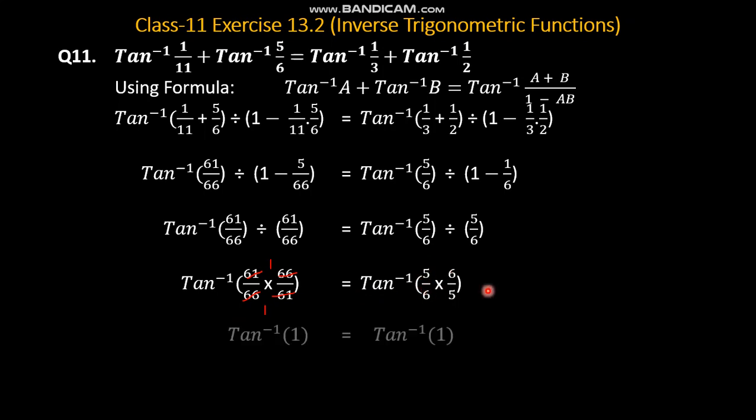तो दोनों side पे आगया tan inverse 1। जो tan inverse 1 की value होती है वह pi by 4 है, क्योंके tan of pi by 4 की value 1 होती है। So tan inverse of 1 is equal to pi by 4. तो दोनों side equal आगए।